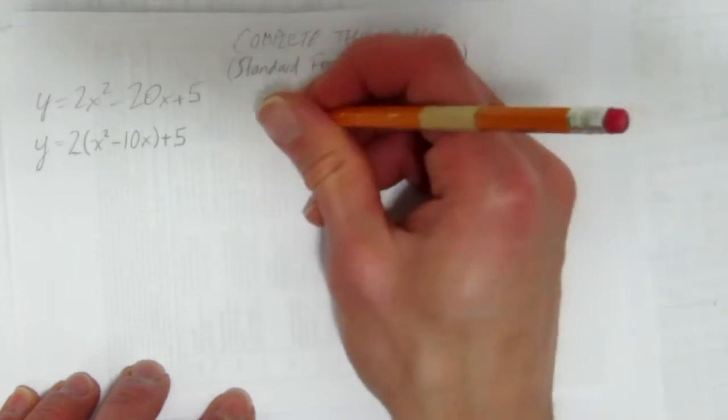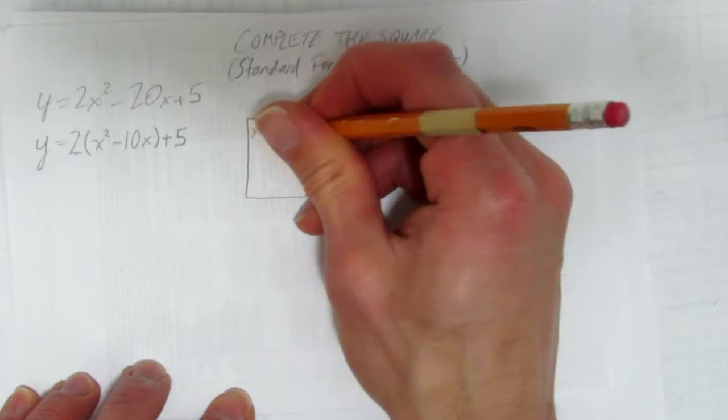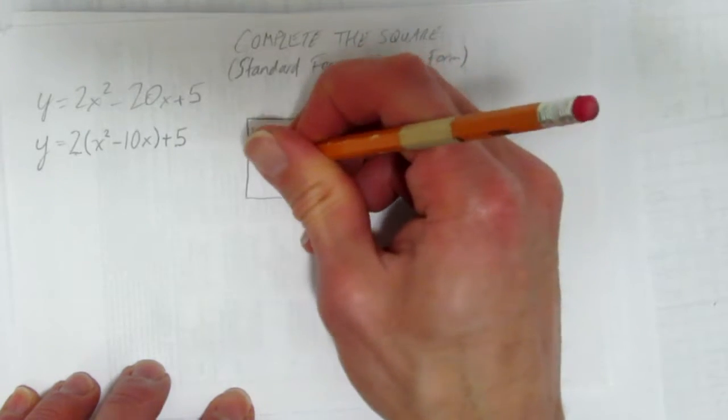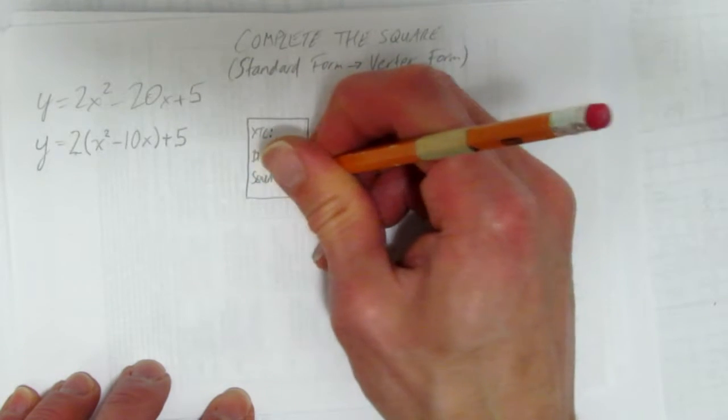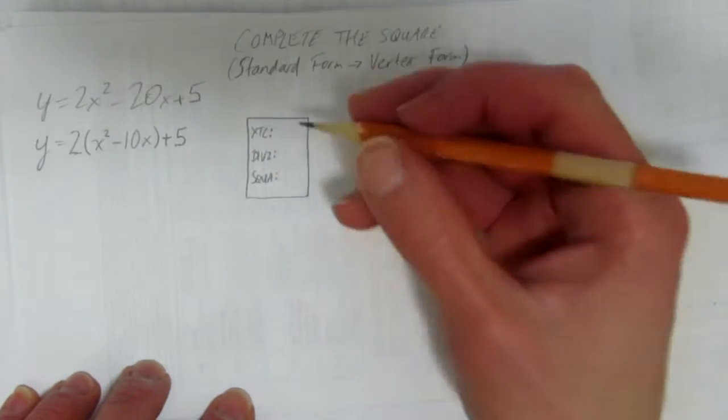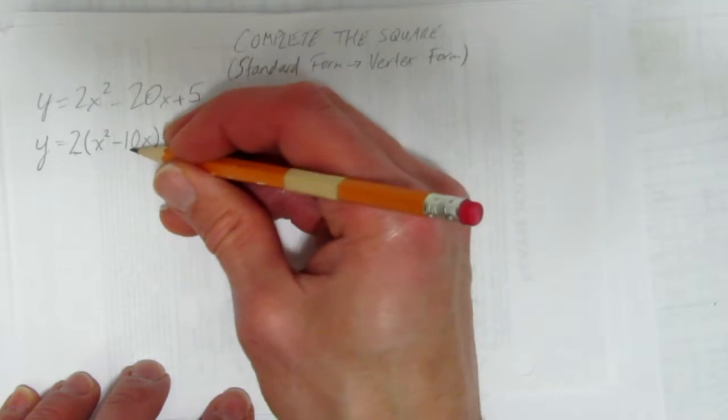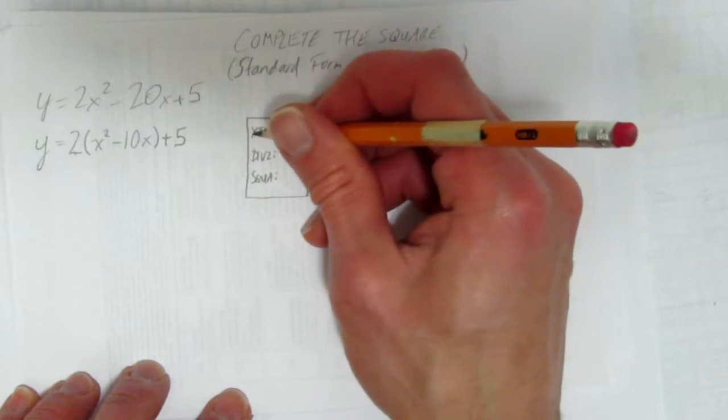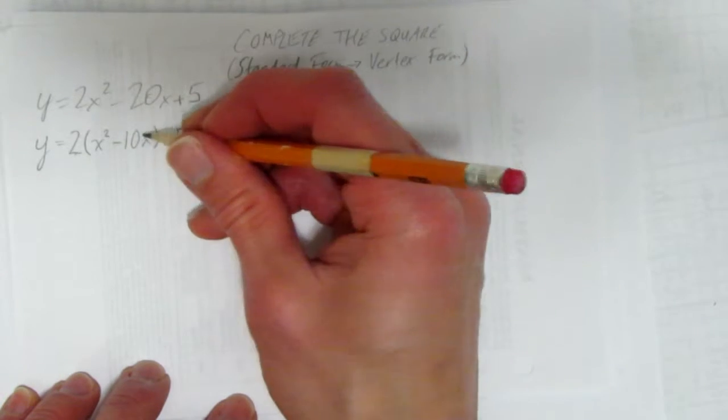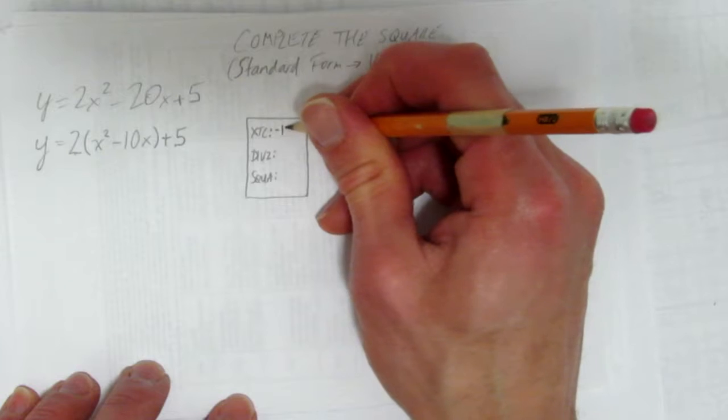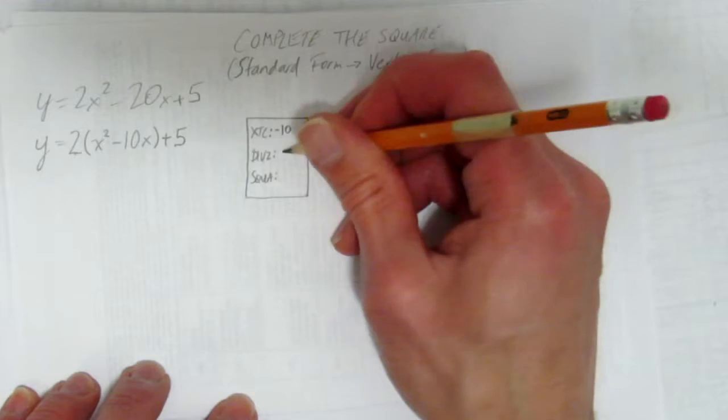Step two. I make a little box on the side. In it, I write down three things: xTC, div2, and square, or squaw for short. I'm going to show you how to use this. First of all, I identify the xTC, the x-term's coefficient. It's the x-term's coefficient that I want. The x is here, its coefficient is negative 10. So I write it here. x-term coefficient of negative 10. Then I divide it by 2. I get negative 5.